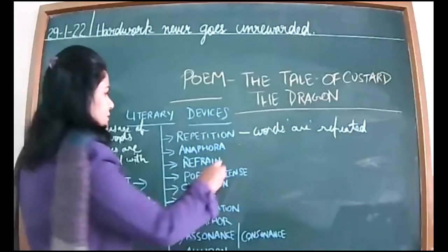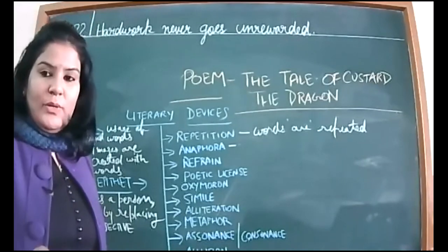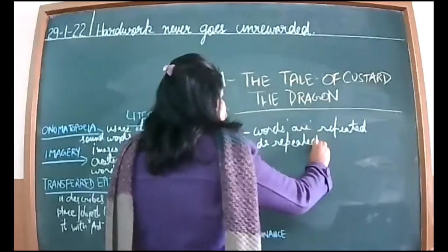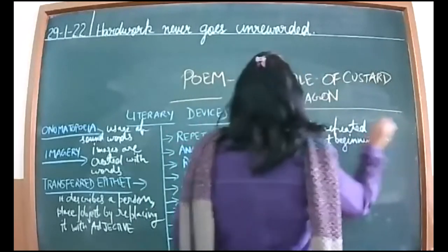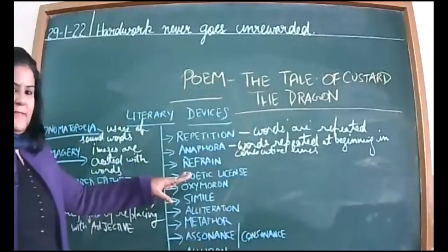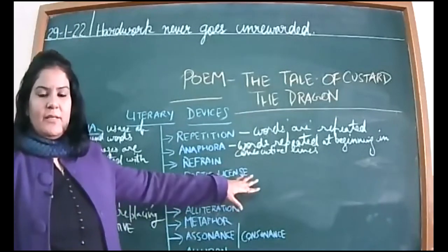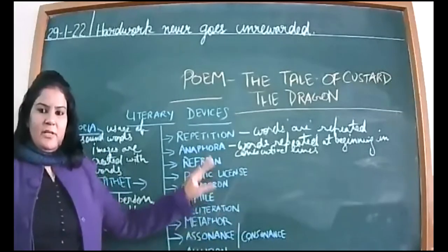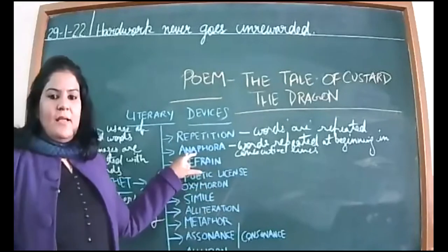Then we have anaphora. In the last poem also, we did anaphora. Anaphora is when there is repeated use of a word at the beginning of consecutive lines. Consecutive lines means the next line only. So when words are repeated at the beginning in consecutive lines, we call it anaphora. Repetition is something else — when words are repeated anywhere in between the stanza, not always at the beginning.